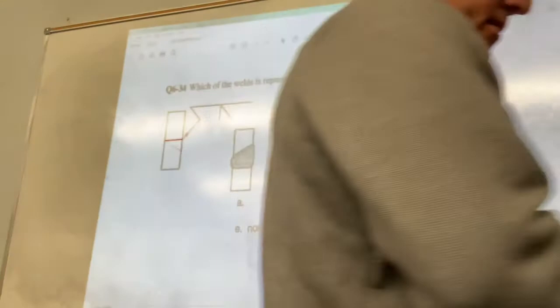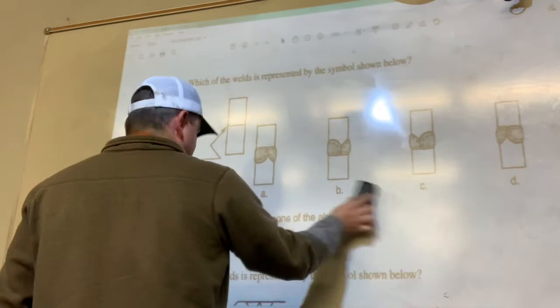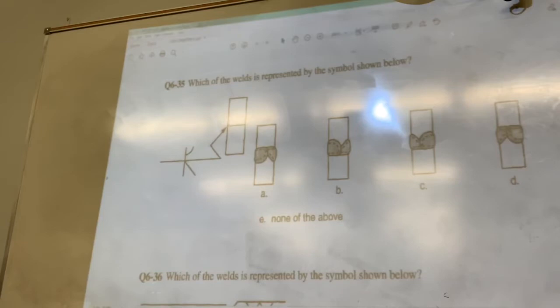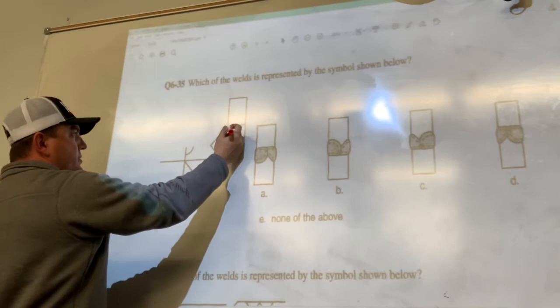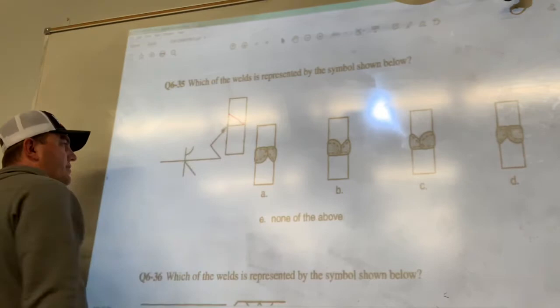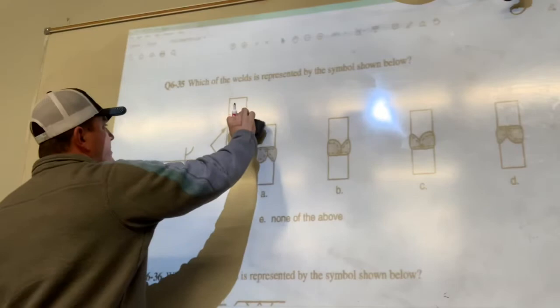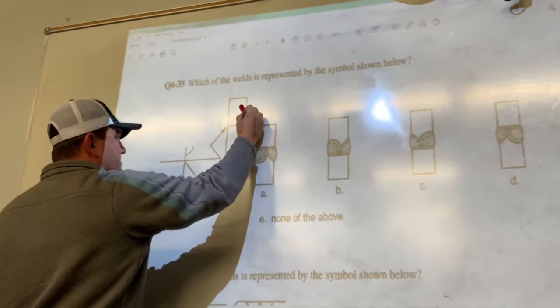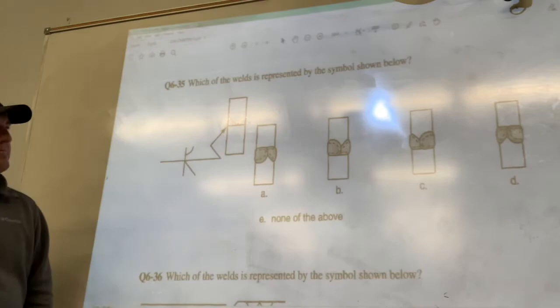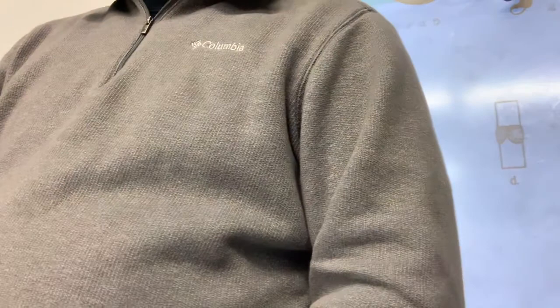35. Alright, arrow side. So this is going to be worked from over here on the bottom. We're pointing up top, look like that. Then we got the other side. The other side will be worked from over here.